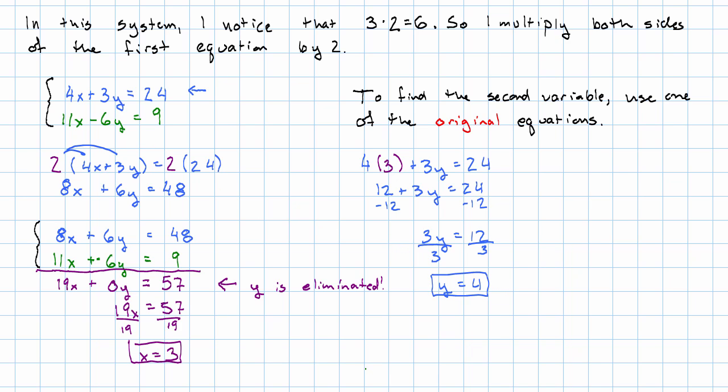If we want to check then, we only need to check in the other original equation. Is it true that 11 times 3 minus 6 times 4 is 9? Well, 11 times 3 is 33, 6 times 4 is 24. That subtraction does in fact give us 9.